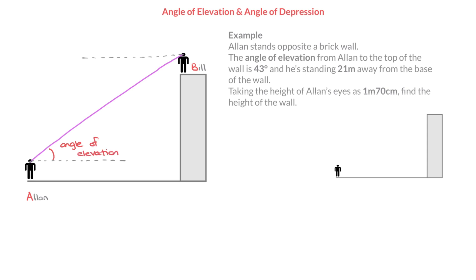On the other hand, we speak of an angle of depression as soon as we have to look downwards to see something. That would correspond to what Bill has to do. Indeed, to see Alan, Bill has to look downwards along the line of sight. So we define the angle of depression as the angle between the horizontal and the line of sight — and I'll label that angle of depression.